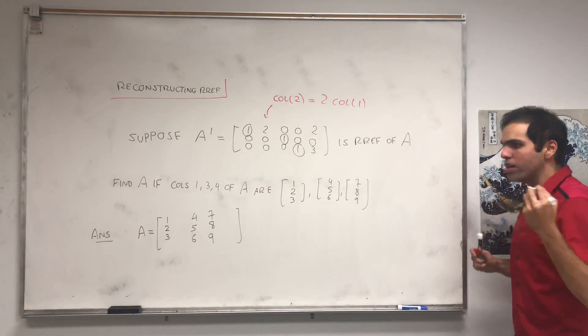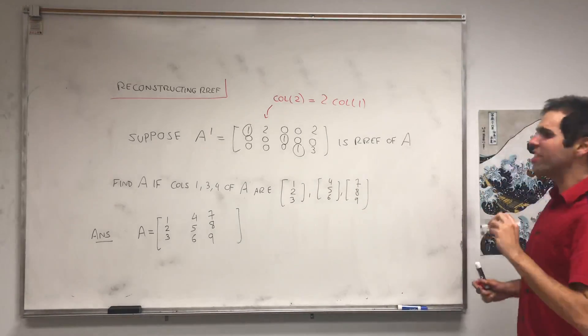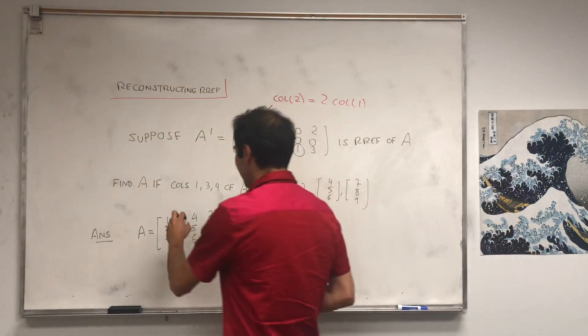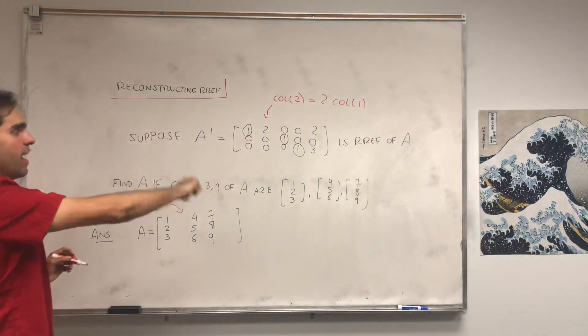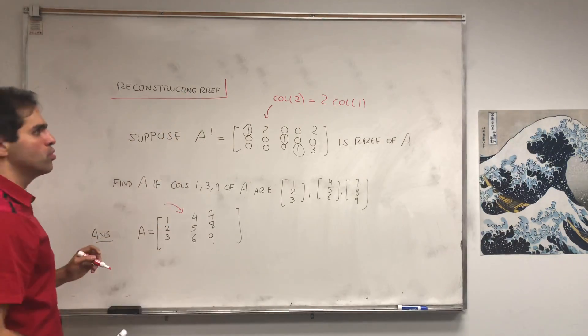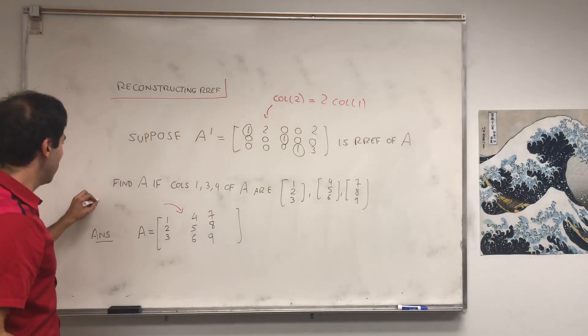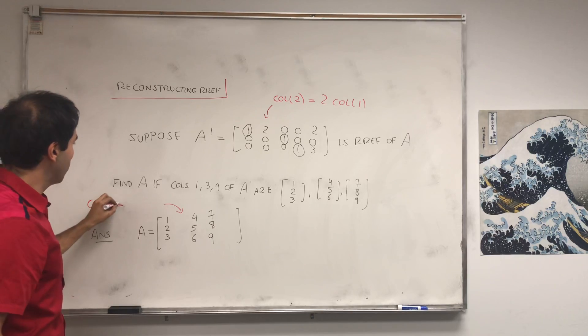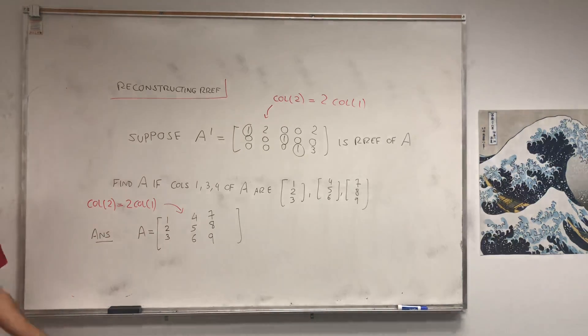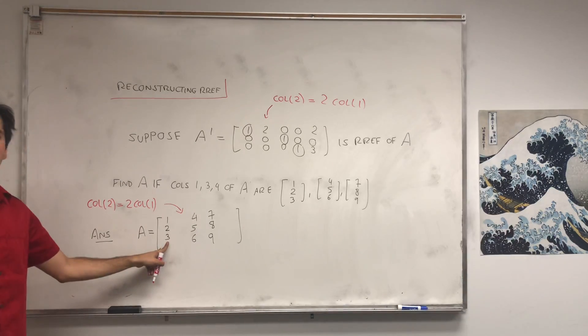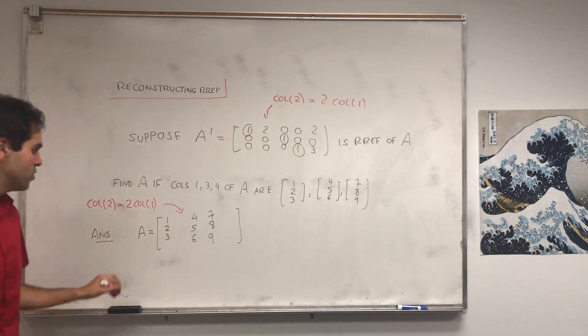Well guess what, the same thing is true for A. Namely, because in the RREF of A we have column two equals two times column one, we also know that the second column of A is two times the first column of A. So to figure out this column, just multiply the first one by two and you get [2, 4, 6].